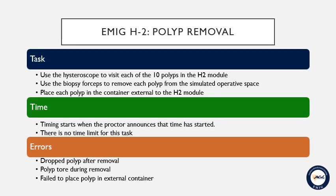The objective of the task is to visit each of the 10 polyps in the H2 module with your hysteroscope. As you visit each of the targets, use the biopsy forceps to grasp and remove the polyp. While leaving the polyp and the jaws of the grasper extended from the distal end of the hysteroscope, withdraw the hysteroscope from the simulator, and then place the polyp into the external collection cup. Time begins when the proctor announces that they've started the timer.